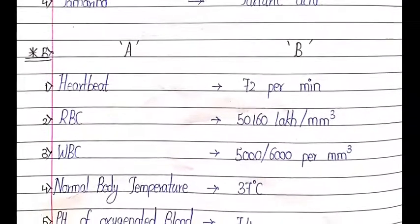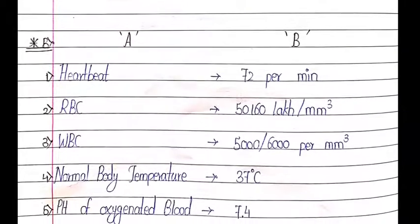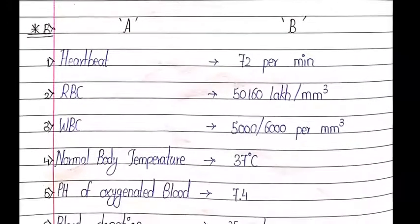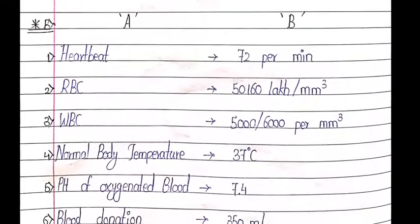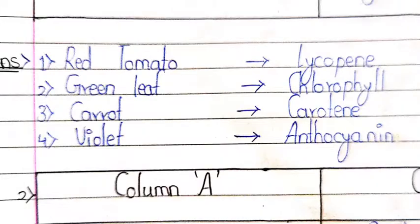pH of oxygenated blood — 7.4; blood donation — 350 ml. Third match: red tomato — lycopene; green leaf — chlorophyll; carrot — carotene; violet — anthocyanin.